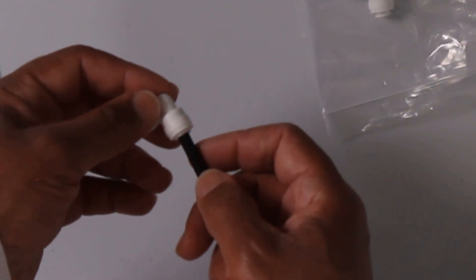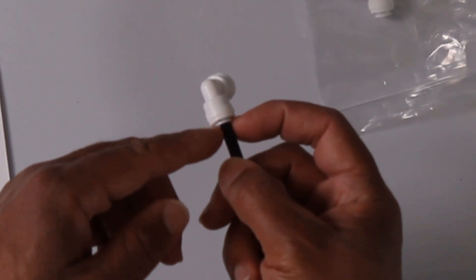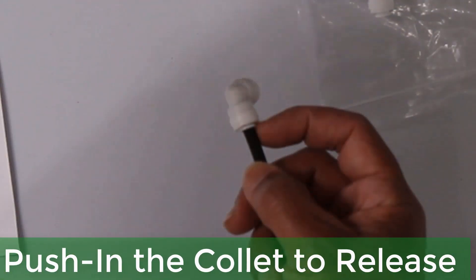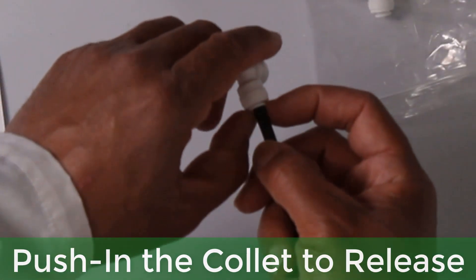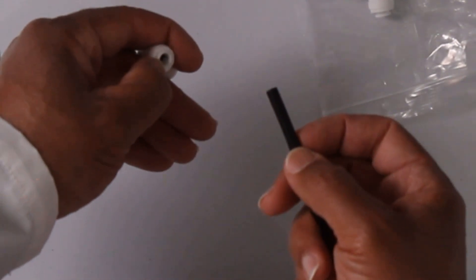Now, to disconnect, all you need to do, the collet here you can see needs to be pushed down into the fitting. And as you push down into the fitting, you pull the tubing out. And that will release the collet's teeth from biting into your tubing and make it easier to remove.